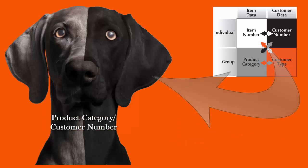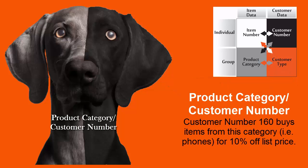The next pricing combination is a combination of Product Category and Customer Number. This means that a specific customer number is able to purchase items from a category, say Phones, for 10% off the list price.